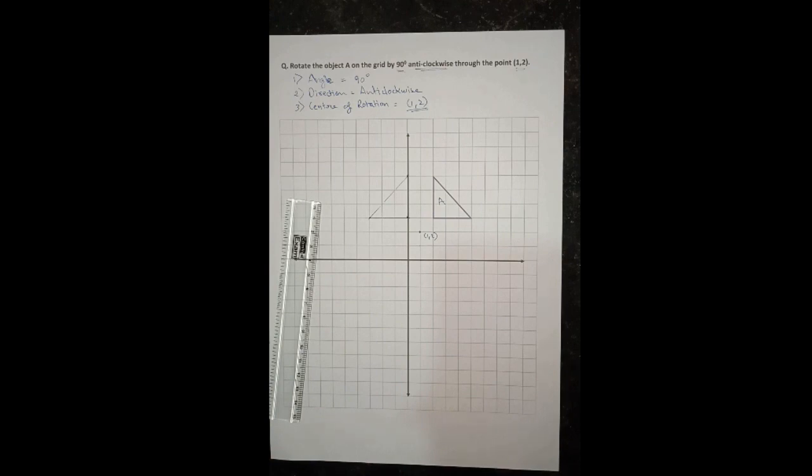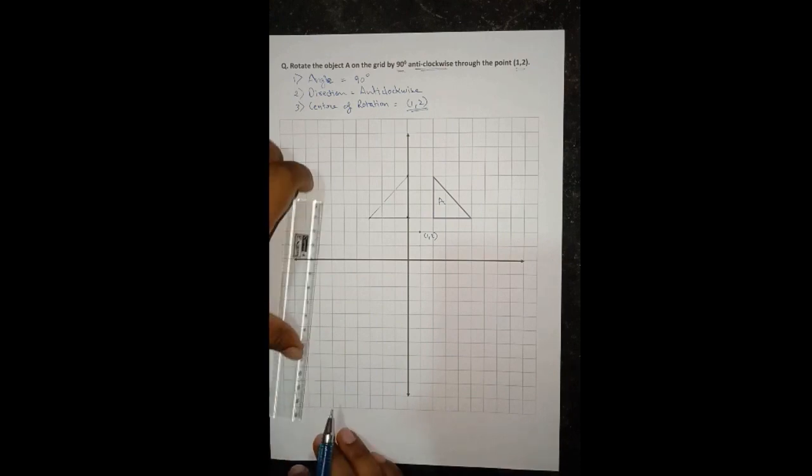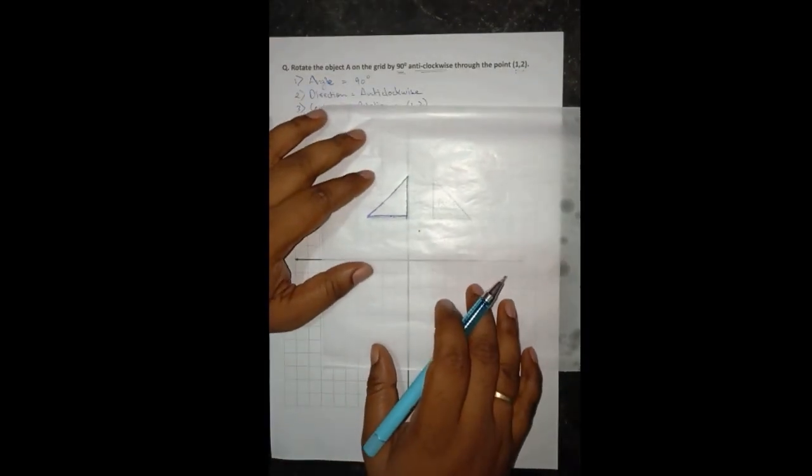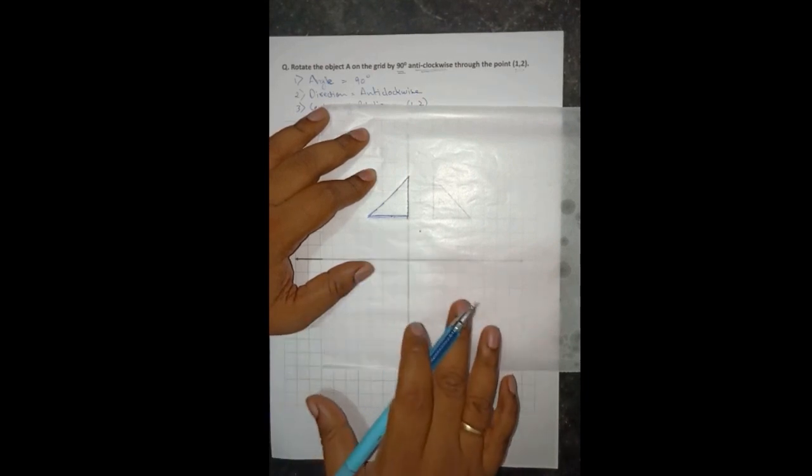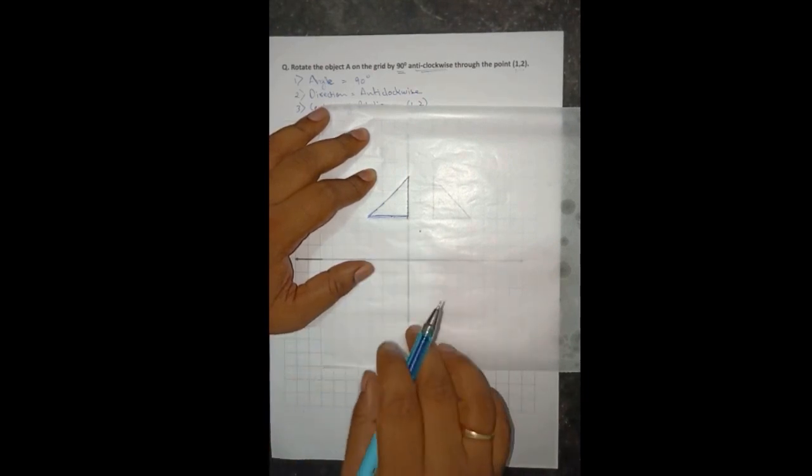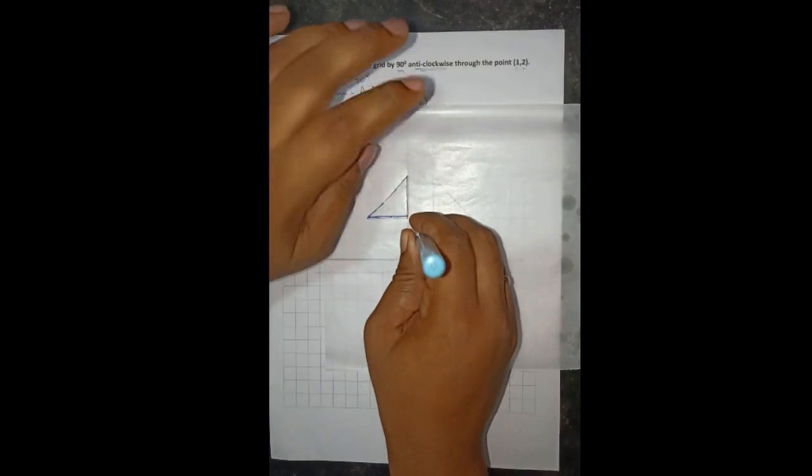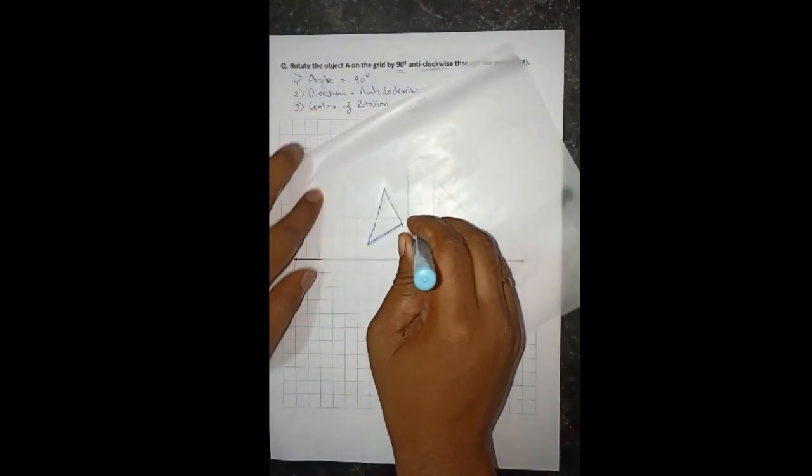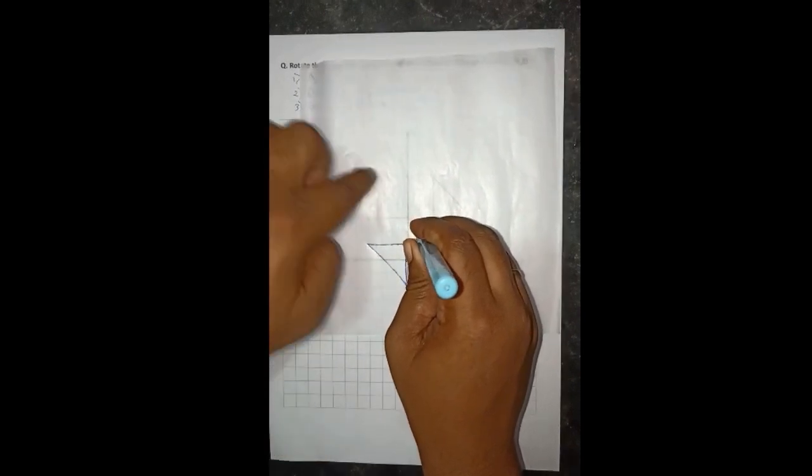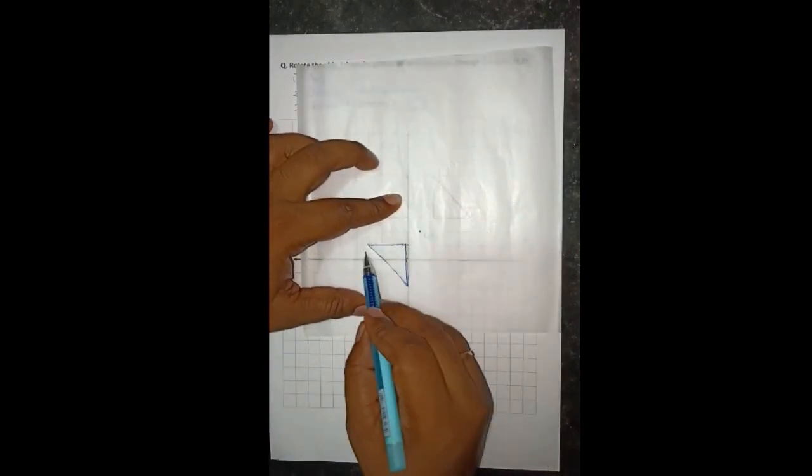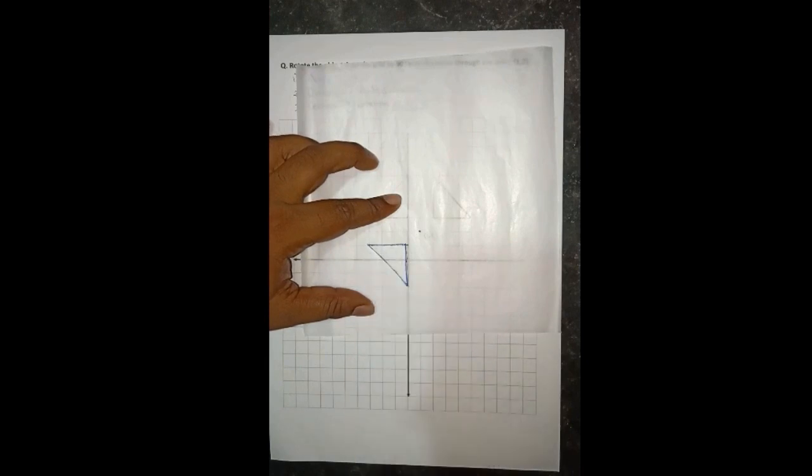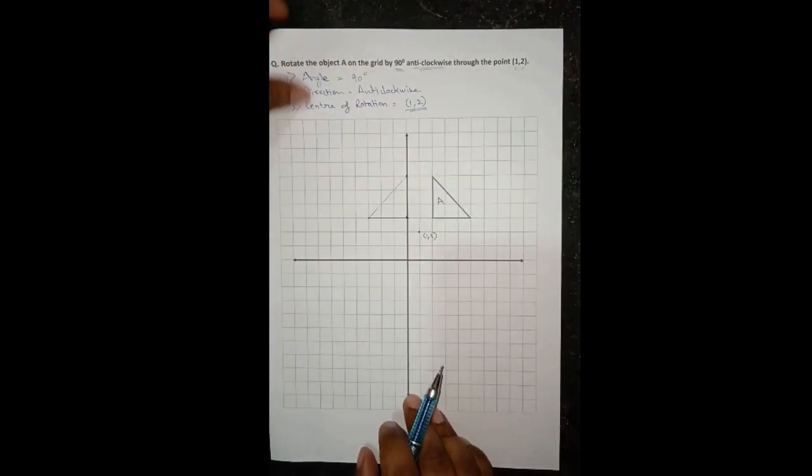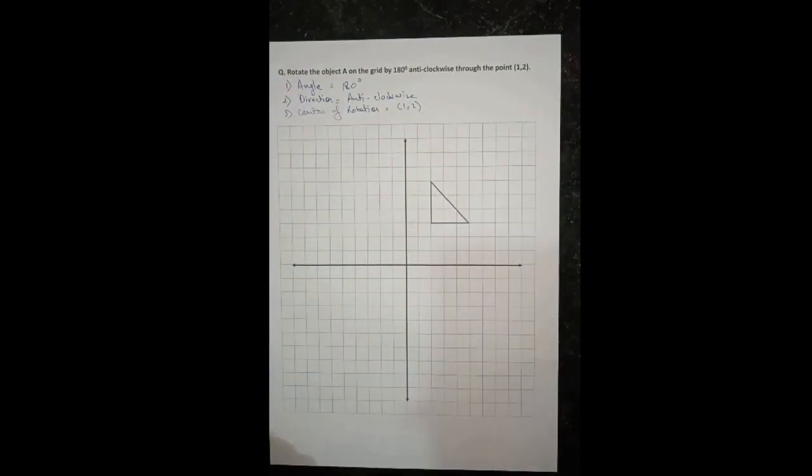So this is the required image of object A. Now similarly if we were asked to rotate this object 180 degrees anticlockwise, then we would have done the same thing, but since this is 90 then again we have to move 90 degrees. So 90 plus 90 is 180, so the required image will be on this part of the grid.